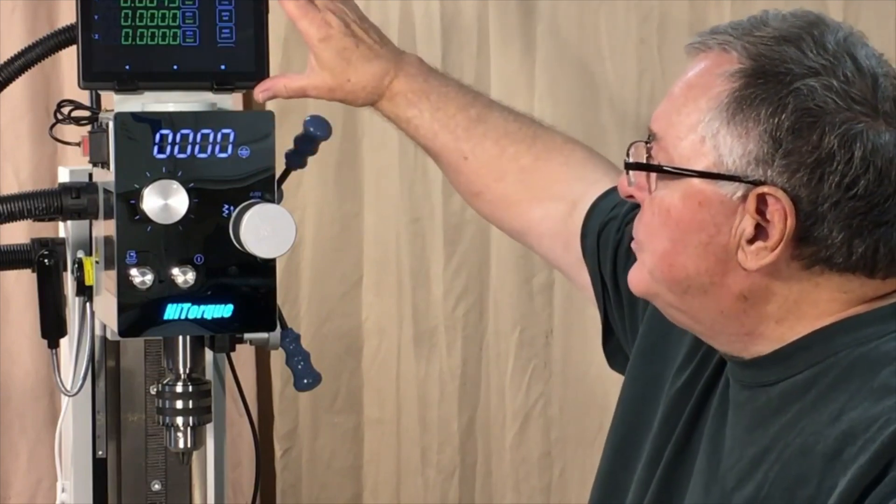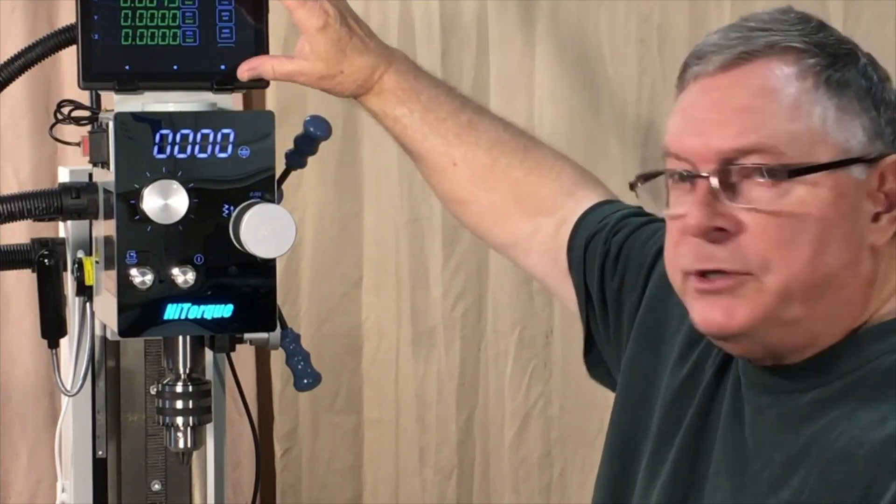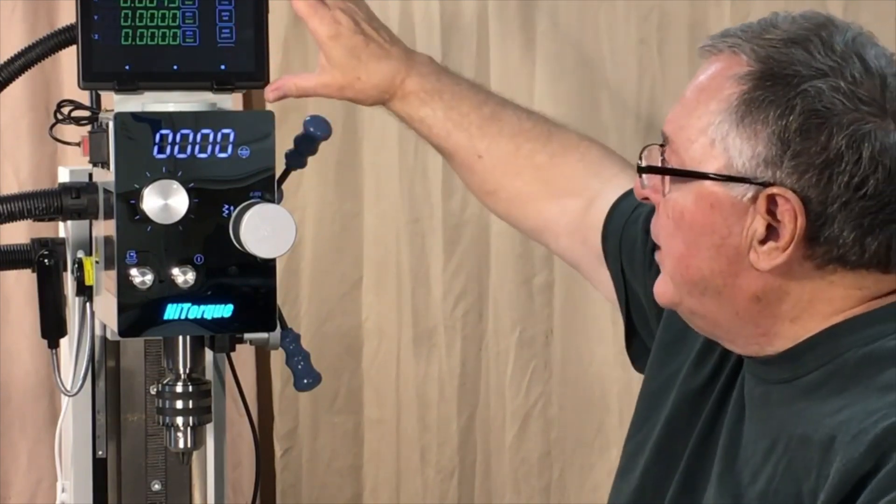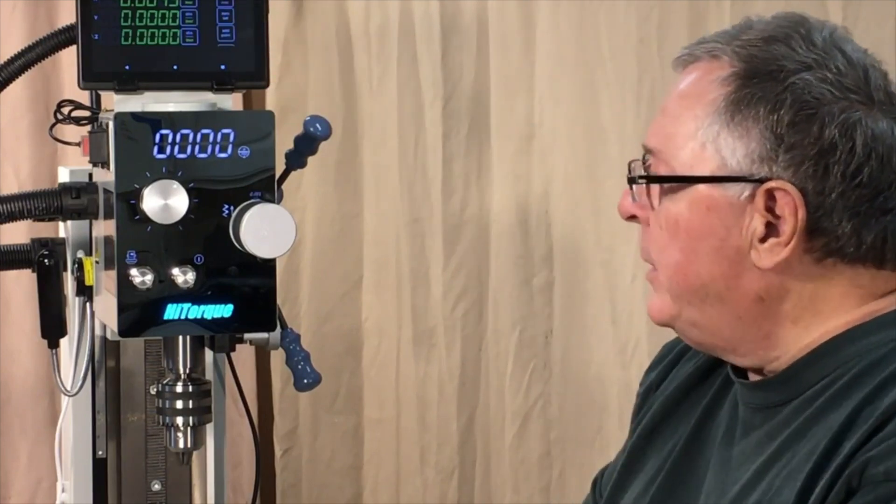It also comes with a built-in three-axis digital readout and a tablet to display the DRO readings. So if you are a serious home machinist or hobbyist who has a need for precision machining on a mill, this is a machine that you should definitely take a look at.